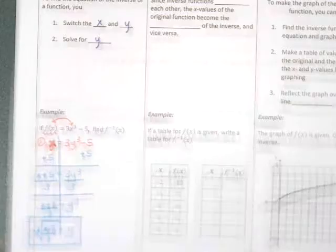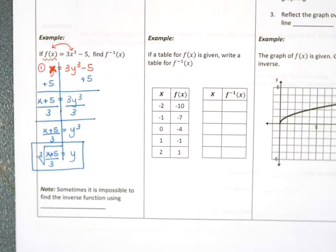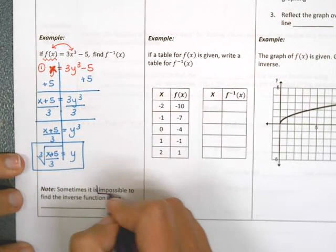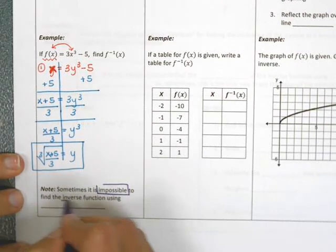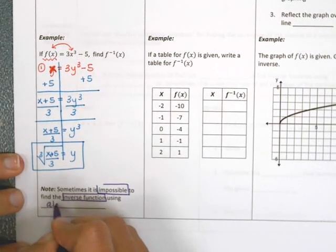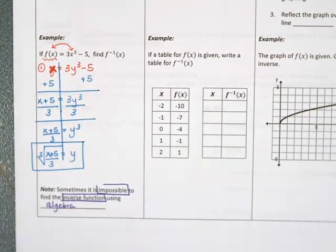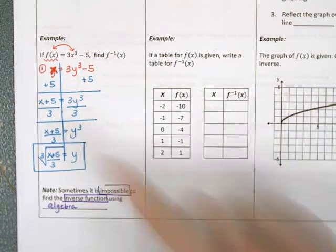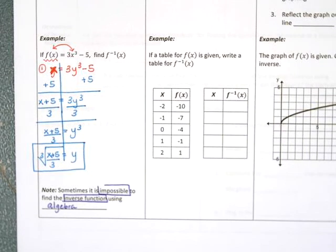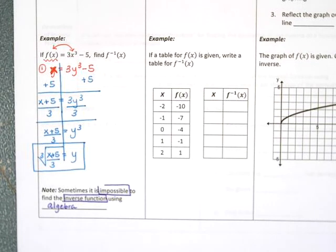One important note: sometimes it is impossible to find the actual equation of the inverse function using algebra. Which means we're going to need a technique for getting the derivative without actually computing the inverse function — that's what we're focused on today. Just like with implicit differentiation we got the derivative without getting y by itself, today we're getting the derivative without finding the inverse first.